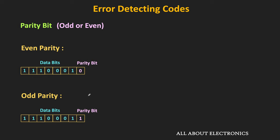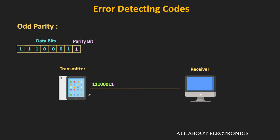Now let's see how we can detect the error with the help of this parity bit. For the odd parity, let's say these are the data bits and this parity bit should be equal to 1. When this code is transmitted to the receiver side, let's say because of an error, this 1 becomes 0. At the receiver, the parity checker circuit will check the parity of the code. If there is no error, the parity should be odd. But here, because of the error, the total number of 1s in the received code will be even — equal to 4. Since the total number of 1s is even, the parity checking circuit will detect the error.